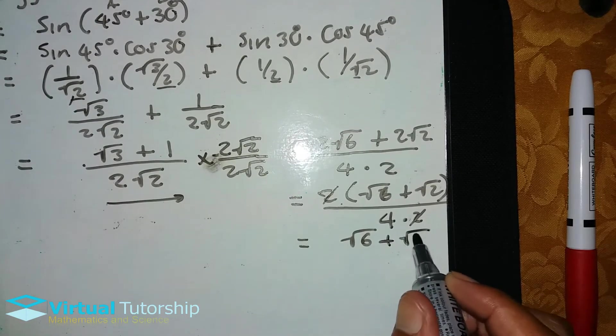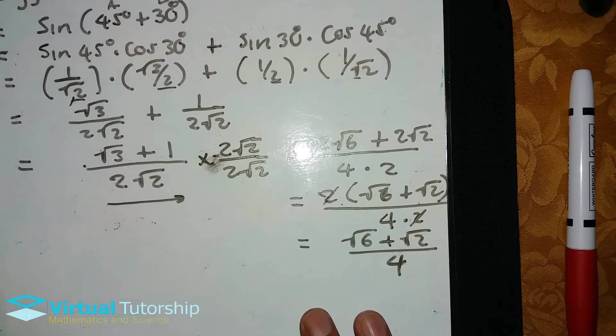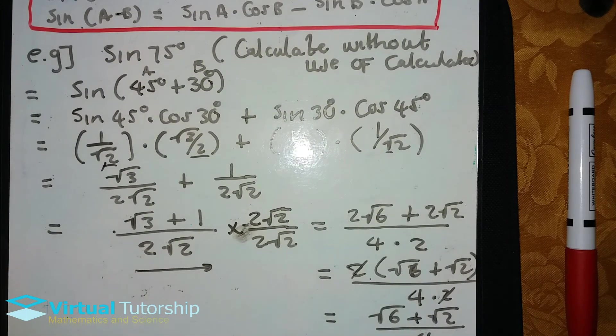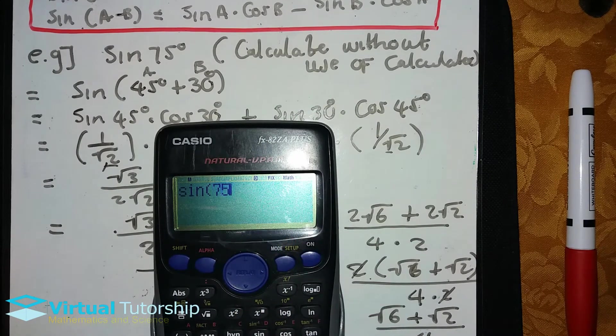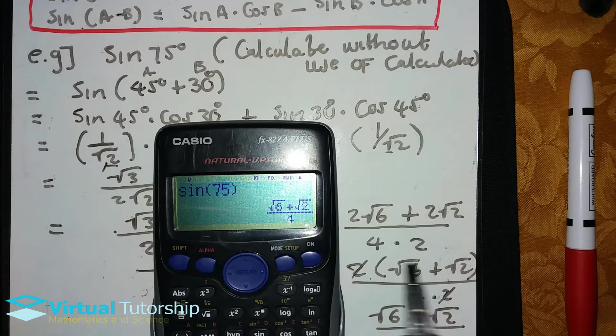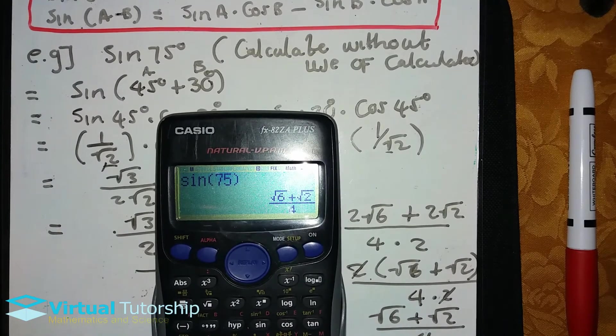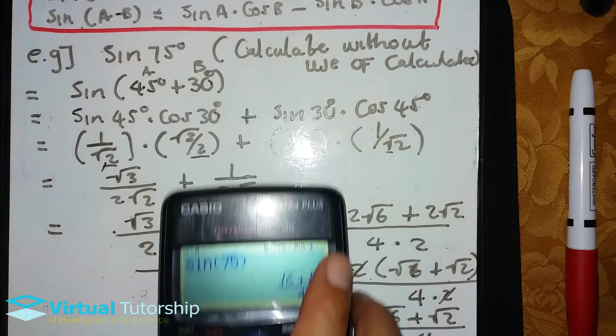So this is square root 6 plus square root 2 over 4. This is my final answer. We can double check using a calculator: sine 75. My answer is square root 6 plus square root 2 over 4. So the answer is correct. Let's do another example.